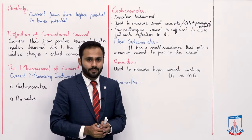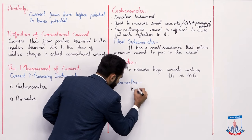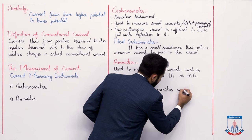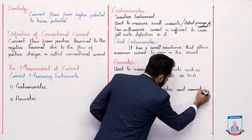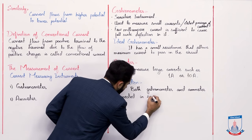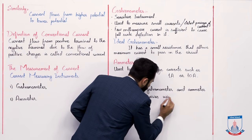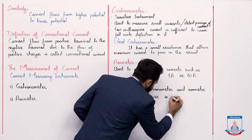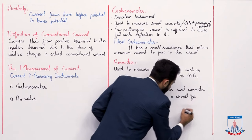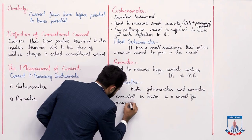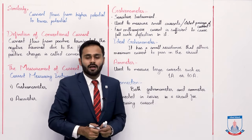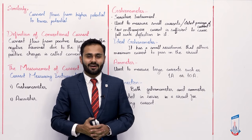So we can say that both the galvanometer and the ammeter are connected in series in a circuit for measuring current. I hope you understand. Take care, Allah Hafiz.